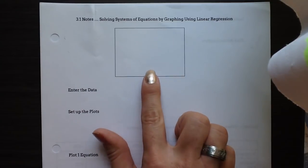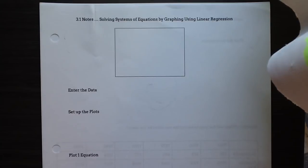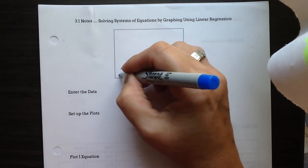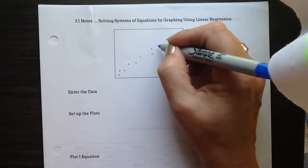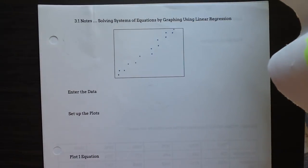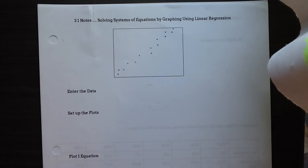I want to start out with a graph and put some dots together like a scatter plot. This is our data, and you can see that there is a positive correlation, which means there would be a slope with a positive line.